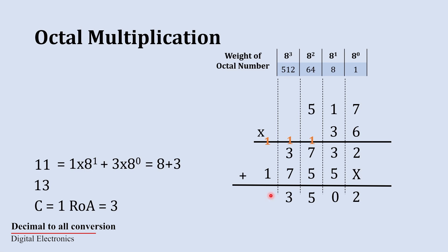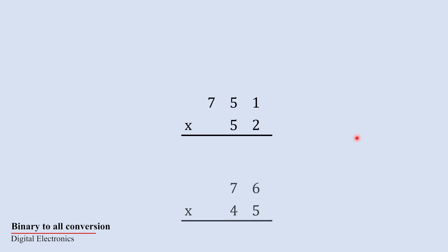Finally, 1 plus 1 equals 2. So 23502 is the multiplication of these two octal numbers. This is how you can do octal multiplication.